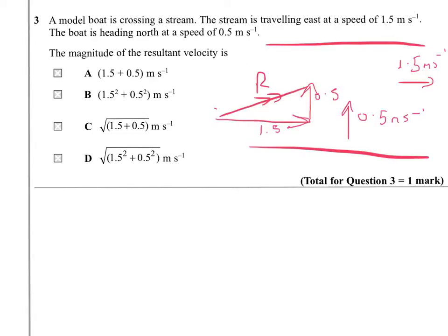So the resultant is going to be the sum, the vector sum, of 1.5 east with 0.5 north. And the size of that R is going to be the square root of the other two squared and added together. So you're looking for the root of 1.5 squared plus 0.5 squared. And that's answer D.